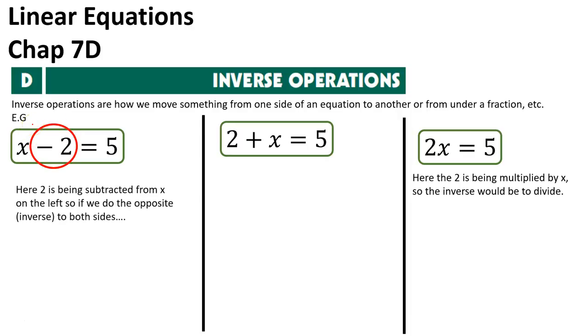Here the 2 is being subtracted from the x on the left hand side. So if we do the opposite, or the inverse as we know it, to both sides, I would need to add 2 to this side. It's the opposite of take. I need to add 2 to the other side, as we learn from our balancing.